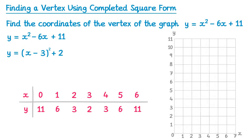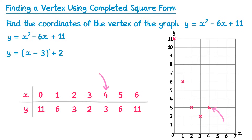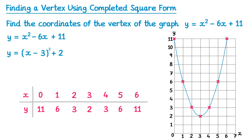We can now plot these points as coordinates on a graph. Starting from the left: when x was 0, y was 11, giving coordinate (0, 11). Then (1, 6), (2, 3), (3, 2), (4, 3), (5, 6), and finally (6, 11). We end up with a lovely quadratic-shaped graph. Joining those up with a smooth curve, we can see that the vertex has coordinates (3, 2).